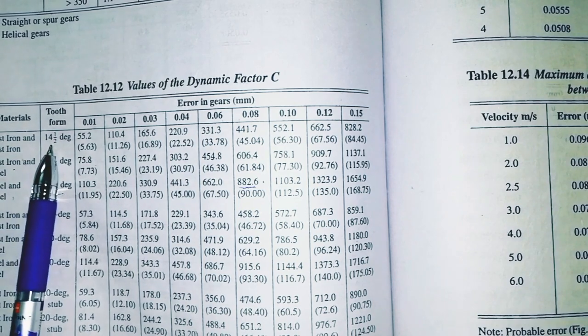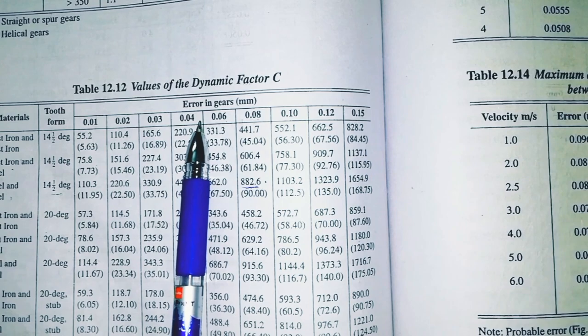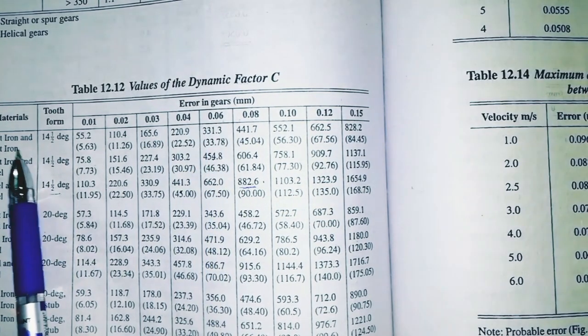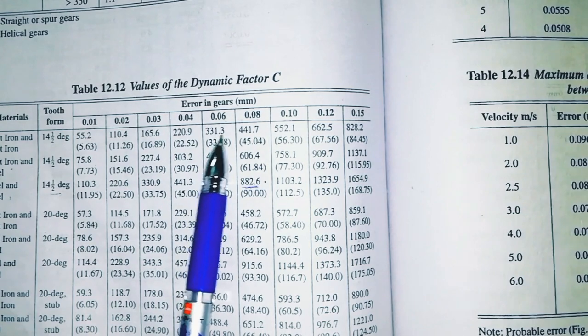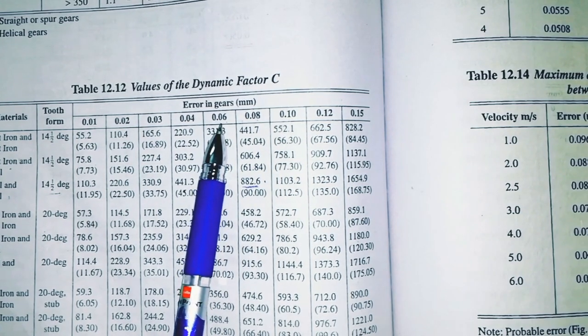C table and fr from the table are on page number 236, table 12.12: values of the dynamic factor C. For cast iron and cast iron at 49.5 degrees, if I select 0.045 or 0.06, the c table value is 331.3 for 0.06.